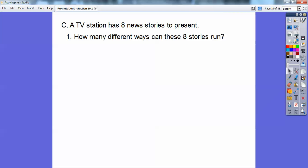A TV station has eight news stories to present. How many different ways can these eight stories run? This is just 8 factorial, so 8 times 7 times 6 times 5 times 4 times 3 times 2 times 1, which is 40,320 different ways. That's a lot of ways.